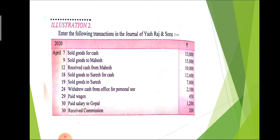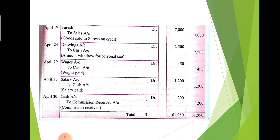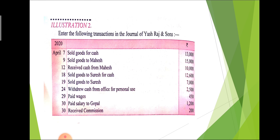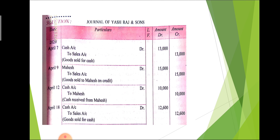On April 12th: received cash from Mahes. Cash comes into the business so cash account is debited. Mahes is the giver, and the giver will be credited. The journal entry is: cash account debit to Mahes, by rupees 10,000. Next: sold goods to Sures for cash — here both the name Sures and cash are given, so we give priority to cash. The journal entry is: cash account debit to sales account, on April 18th.